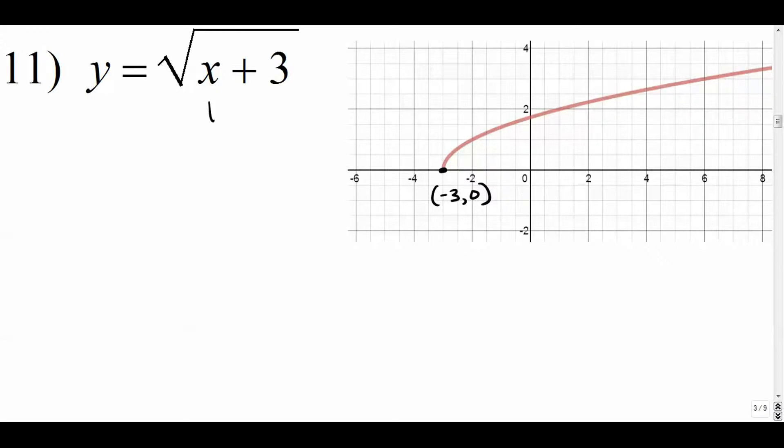And if we plug in negative 3 right here, we get the square root of 0. So the output of that would be 0, which means negative 3 comma 0 is in fact a kind of closed circle there. It is a point on our graph. So that means that negative 3 is the beginning of our domain, and 0 is the beginning of our range.